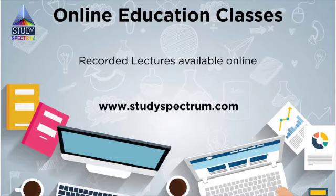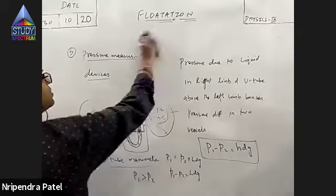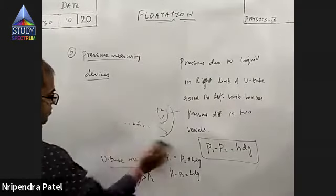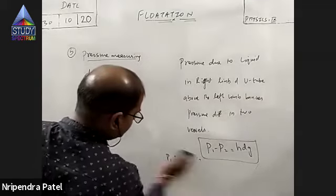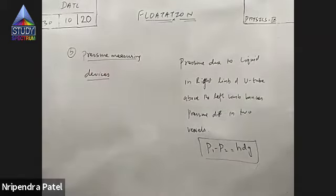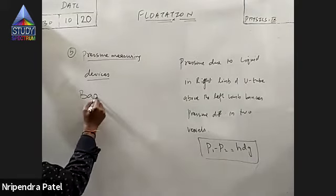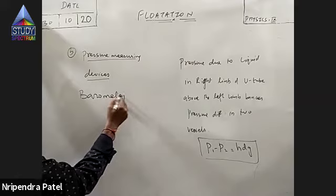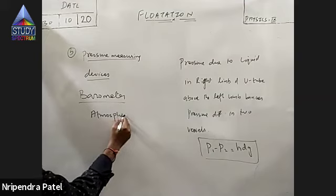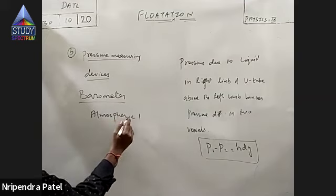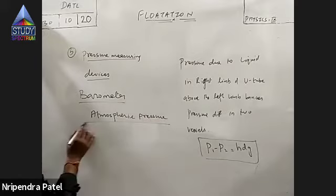Now there is one more device — a pressure measuring device — which is used to measure atmospheric pressure. This manometer is used to measure pressure difference between two points. There is a barometer, which is used to measure atmospheric pressure. Let's discuss what that is.